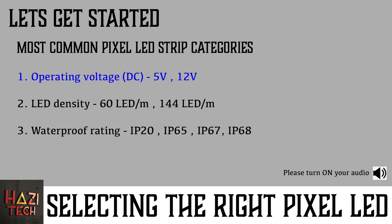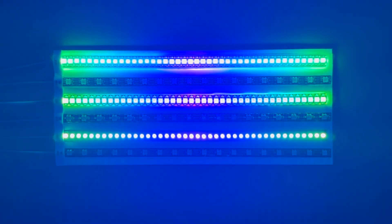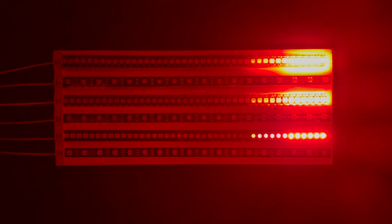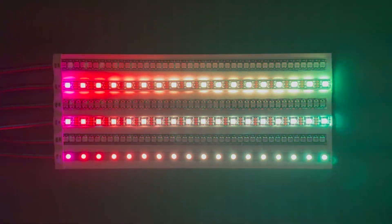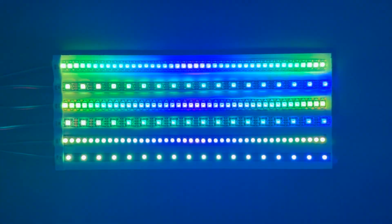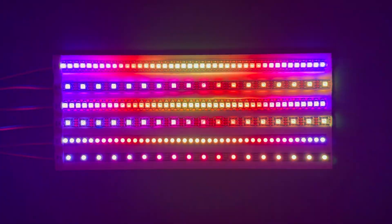The first category is operating voltage, the second is LED density, and the third is waterproof level. When it comes to operating voltage, there are mainly two types: 5 volts and 12 volts. For most projects, 5 volts is the most common type available. There are also special 12 volt LED strips — for example, if you want to obtain pure white, you can use 12 volt pixel LED white strips with the required color temperature.